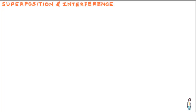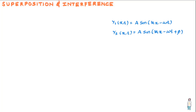Let us take one wave as y1(x,t) = a sin(kx − ωt) and another wave not in phase with the first as y2(x,t) = a sin(kx − ωt + φ). Both waves have the same angular frequency ω, frequency f, angular wave number k, wavelength λ, and amplitude a. They both travel in the positive x-direction with the same speed, but are out of phase with each other by φ radians — a phase difference of φ.